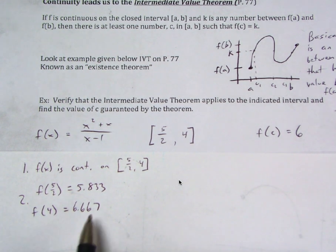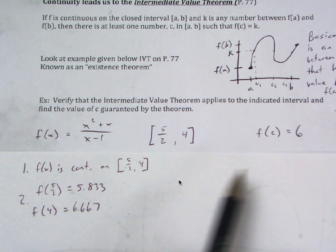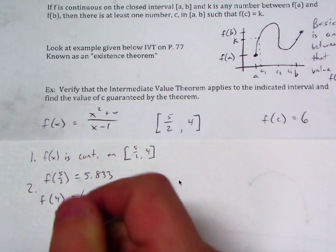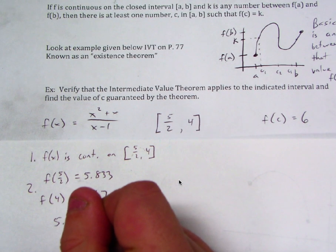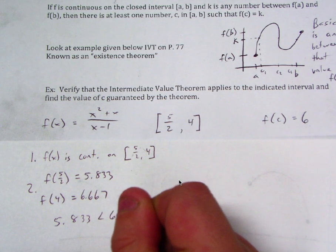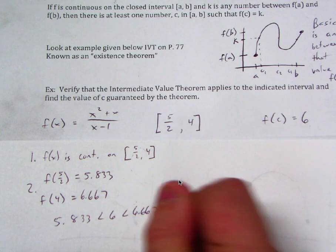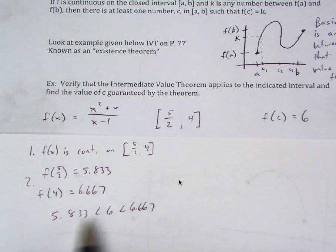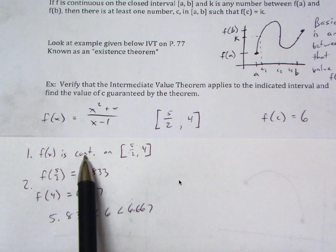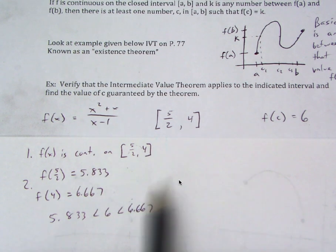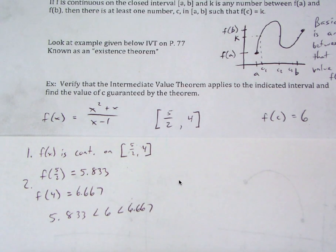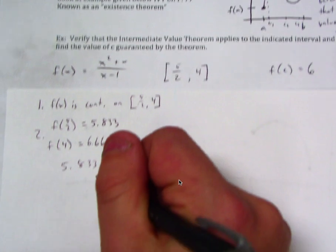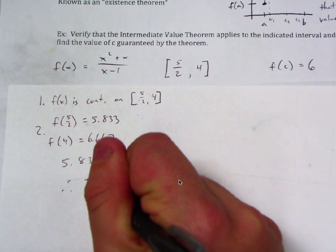We have now shown that 6 is in between these values — write a statement that 5.833 is less than 6, which is less than 6.667 — showing that our Y value in question is between the Y values of the endpoints. So our two conditions are met: we have a continuous function on the closed interval, and 6 is between the Y values of the endpoints. That's part one of the question — we have verified it. Therefore, the Intermediate Value Theorem applies.